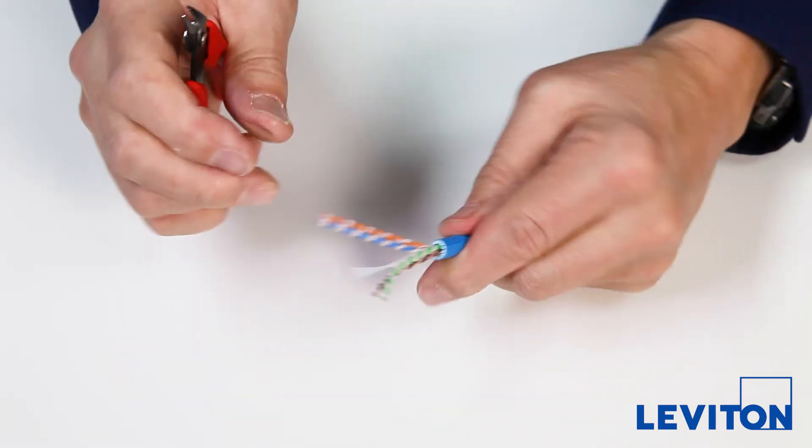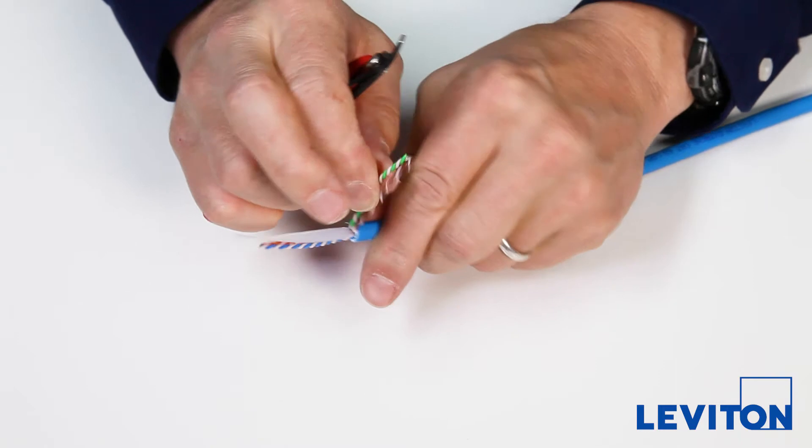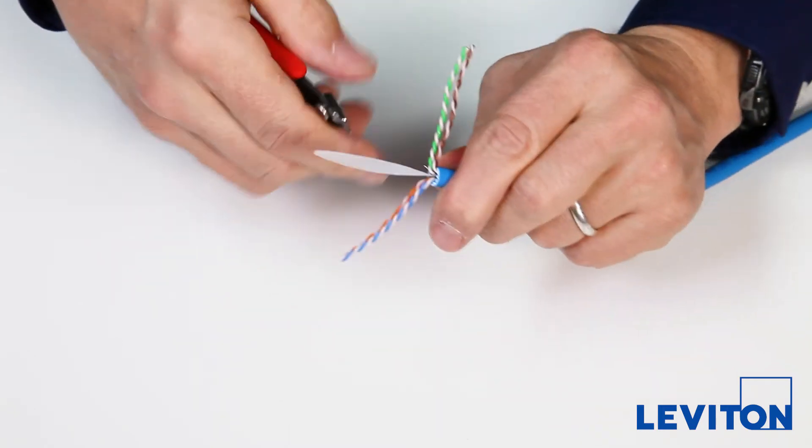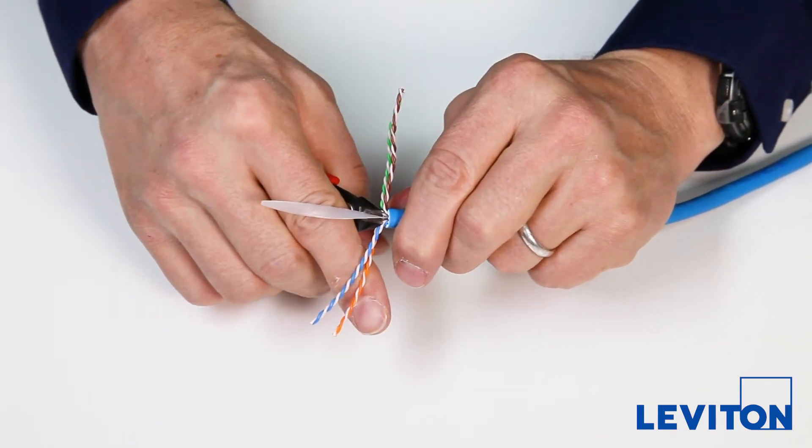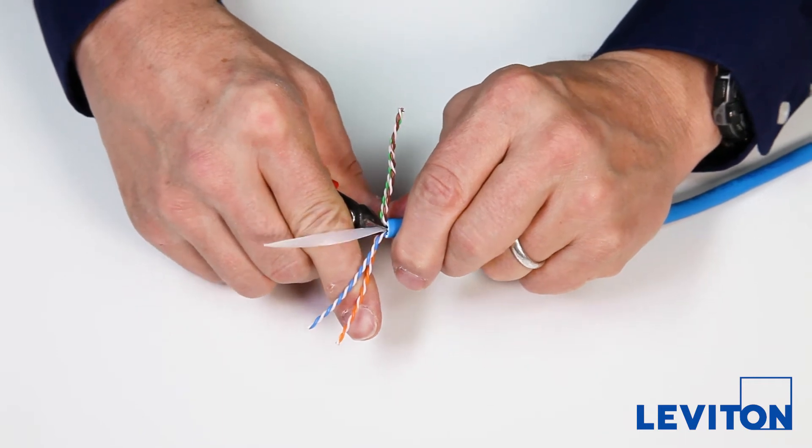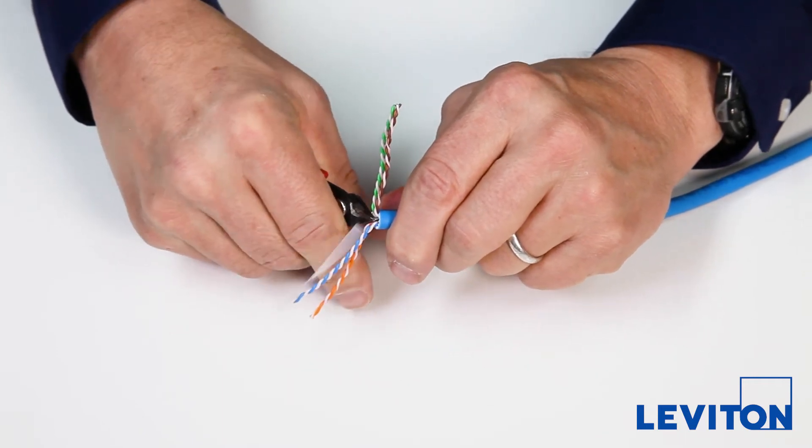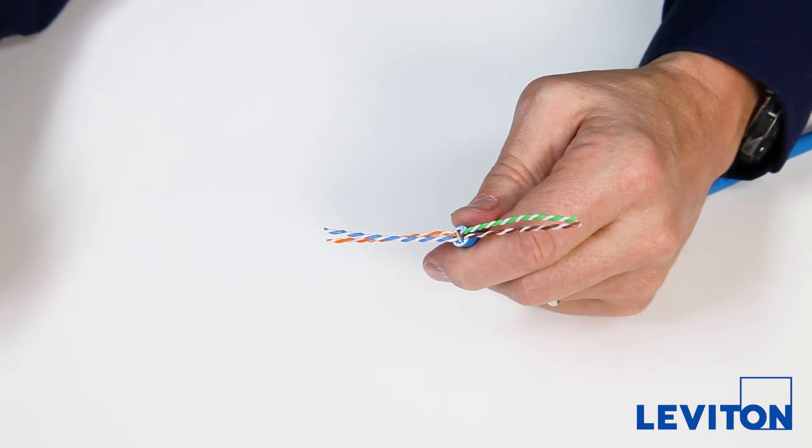Cut out any non-pair elements. CAT 6A cable may contain a traditional cross-separator, filler tubes, a mylar layer, or a rip string. In this case, the tape between two of the pairs must be removed.